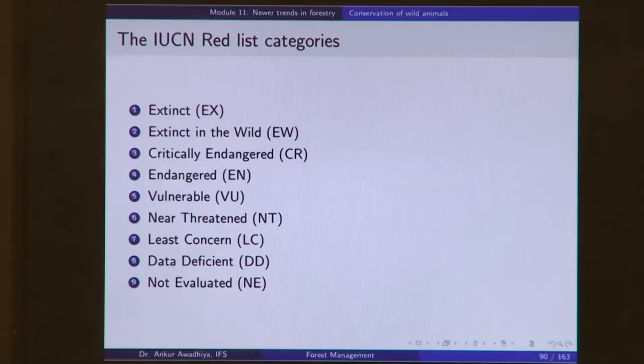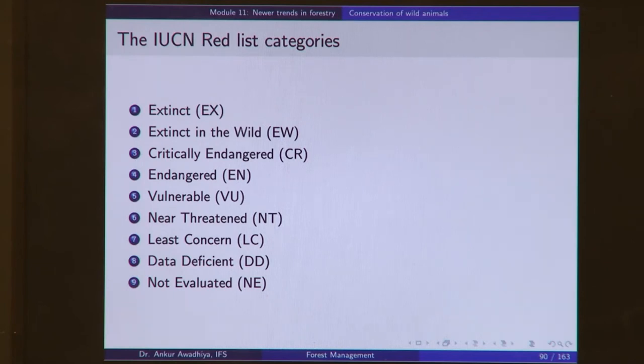Not everybody appreciates the utility of wild animals, which is why certain people go out and do hunting or poaching, even though it is not permitted by law. Because such people have existed for a long time in our societies, over time certain animals have been pushed to extinction or to the brink of extinction. We can classify different species as per the IUCN Red List categories. There are certain species that are already extinct, such as the dodo — this species no longer exists anywhere, neither in the wild nor in captivity. It is completely gone.